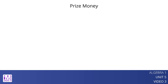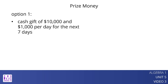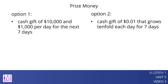Suppose that you won the top prize from a game show and are given two options. Option 1 is a cash gift of $10,000 and $1,000 per day for the next seven days. Option 2 is a cash gift of 1 cent that grows tenfold each day for seven days. In the first option, the amount of money increases by the same amount, $1,000, each day, so we can represent it with a linear function. In the second option, the money grows by multiples of ten, so we can represent it with an exponential function.